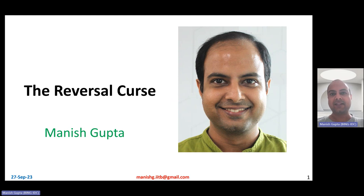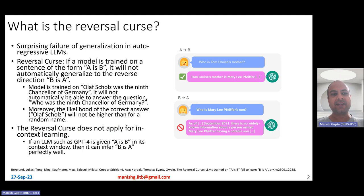Let's understand what's this reversal curse for large language models. In fact, it is a surprising failure of generalization in autoregressive large language models. It turns out that this autoregressive learning, learning from left to right, causes these large language models to not be able to generalize for things from right to left. More specifically, if a model is trained on a sentence of the form A is B, it will not automatically generalize to the reverse direction B is A.